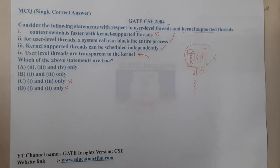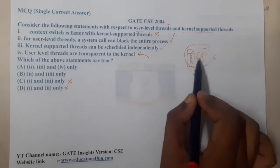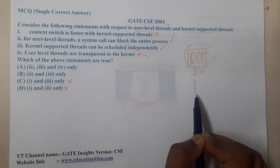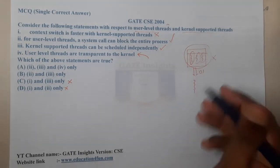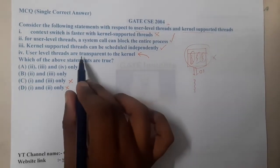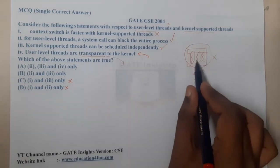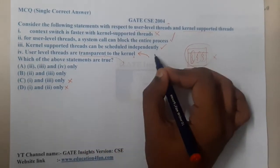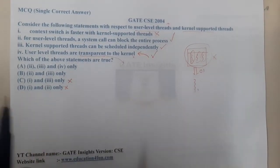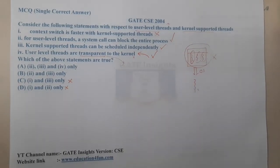What does transparency mean in computer terminology? Transparency means hiding something from the operating system. User-level threads internally have multiple threads, but they show the operating system only a single thread — they hide their internal structure. Most students mistakenly think transparency means the OS should know about these threads and hence mark this false. But in fact, this statement is TRUE — the OS does not know about the internal threads, like a solid wall between them.